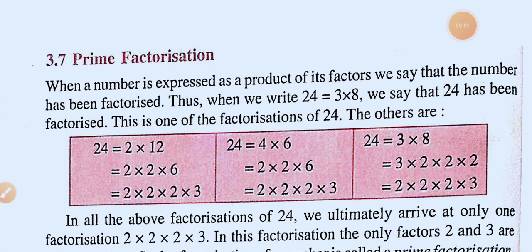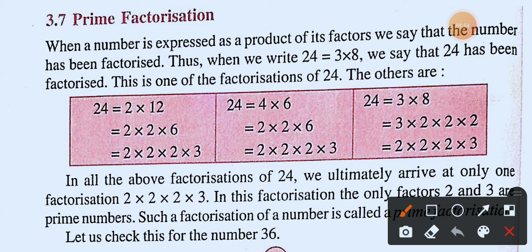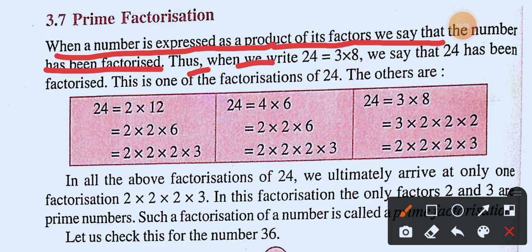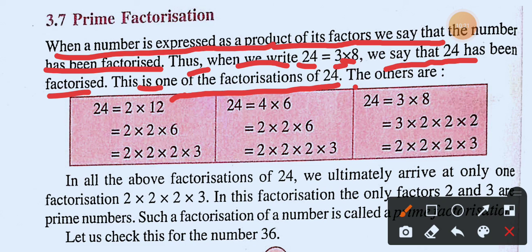Now we move to prime factorization. When a number is expressed as a product of its factors, we say that the number has been factorized. For example, when we write 24 = 3 × 8, we say that twenty-four has been factorized. This is one of the factorizations of twenty-four. We can find multiple ways to factorize a number.